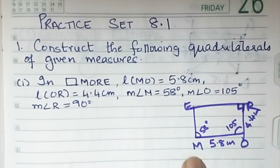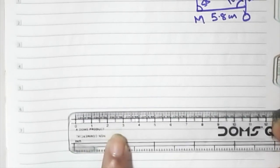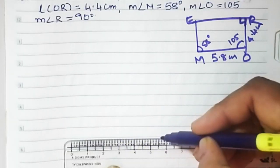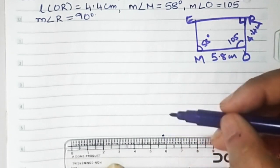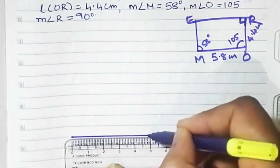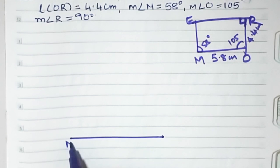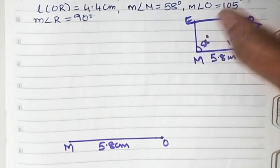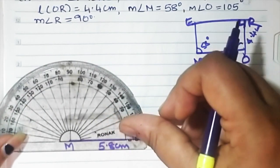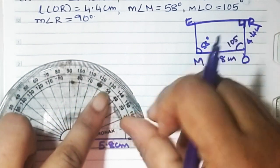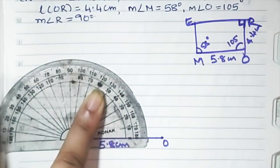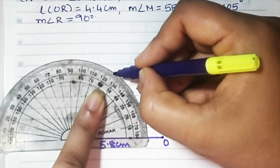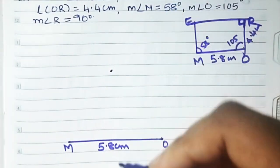First we have to draw the baseline, that is MO. MO is 5.8, so let's measure: 5, 6, 7, 8 — this is 5.8. This is my zero, so MO is 5.8 centimeters. Next we'll take the angle at M, which is 58°. It's an acute angle — it will come between 50 and 60. So 55, then three small lines: 55, 56, 57, 58. Mark and join at 58°.